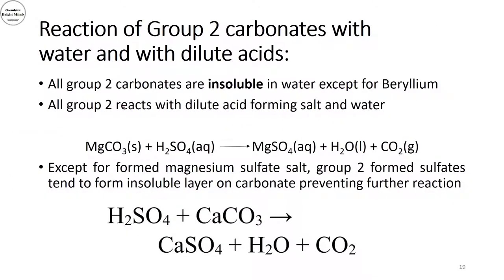Group 2 carbonates do not react with water and do not dissolve in water, except for beryllium. They do react with dilute acids. For example, magnesium carbonate reacts with dilute sulfuric acid to give magnesium sulfate, water, and carbon dioxide. However, for elements lower in the group — like calcium — the reaction with dilute sulfuric acid leads to the formation of insoluble sulfate, which deposits on the surface of the carbonate and prevents further reaction.